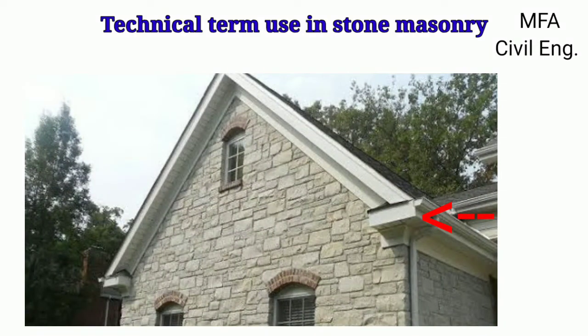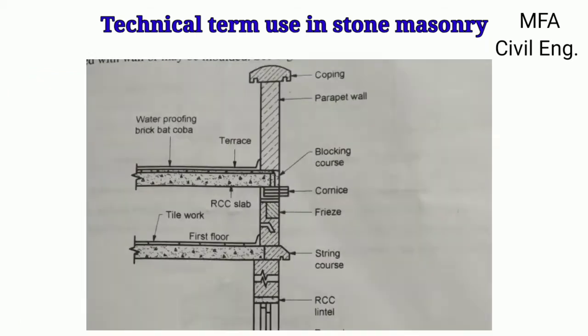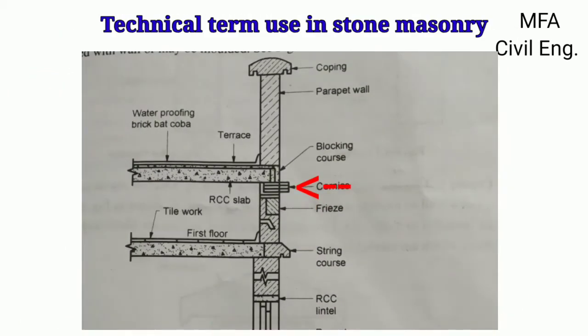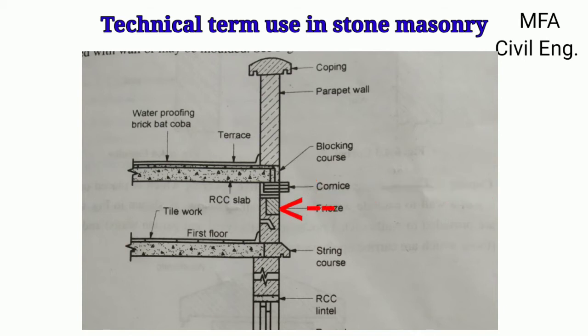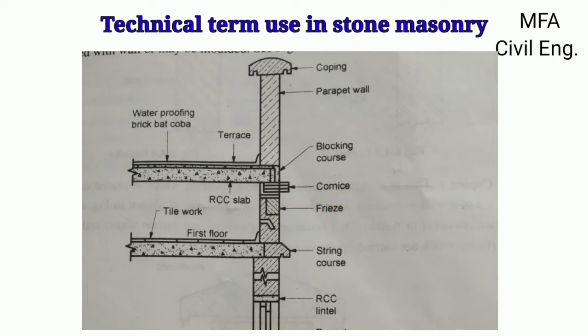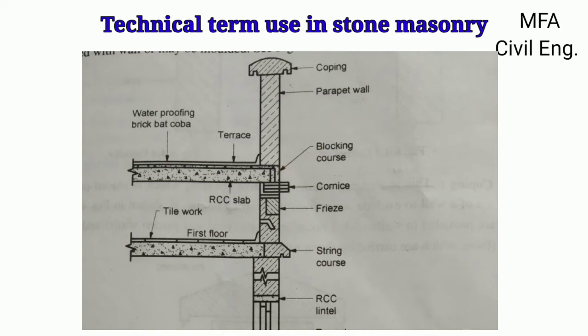The projecting stone usually provided to serve as a support for a roof, tile, beam, or weather shed is called a corbel. The course of stone provided at the top of the wall is called the cornice. It is generally molded and given an ornamental treatment, and is weathered to dispose of rainwater. The course of stone provided immediately below the cornice is called the frieze, which may be flush with the wall or molded. The course of stone provided immediately above the cornice to check the tendency of the cornice to overturn is called the blocking course.